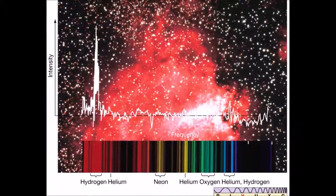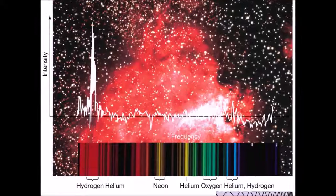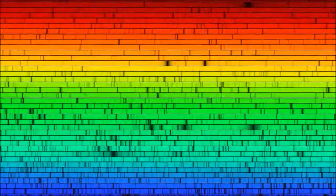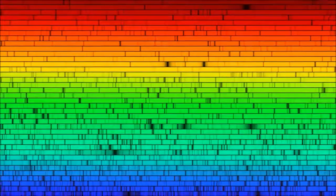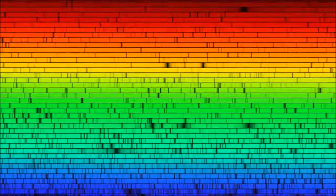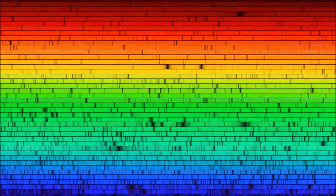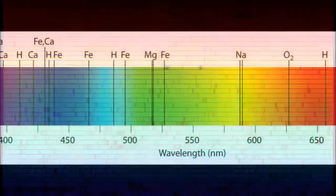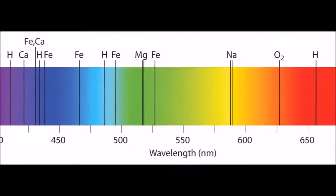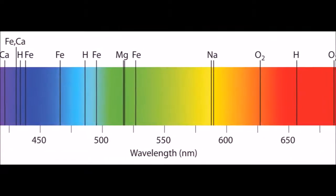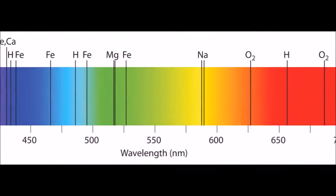Because all elements have unique spectra, emission and absorption lines can be used to identify any gas in the universe. They can be thought of as fingerprints of elements, and they can be used to determine an astronomical object's chemical composition. For example, this is the absorption spectrum of the Sun. By comparing it with the absorption spectra of other elements, one can easily determine that the Sun is composed principally of hydrogen and helium. In the early 20th century, it was still unclear what makes an element exhibit a certain spectrum. What did these lines represent, and why did they appear in these locations?